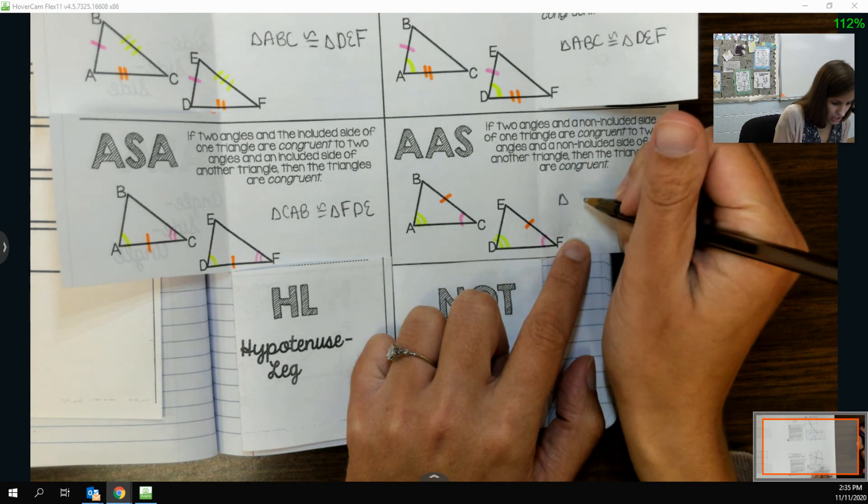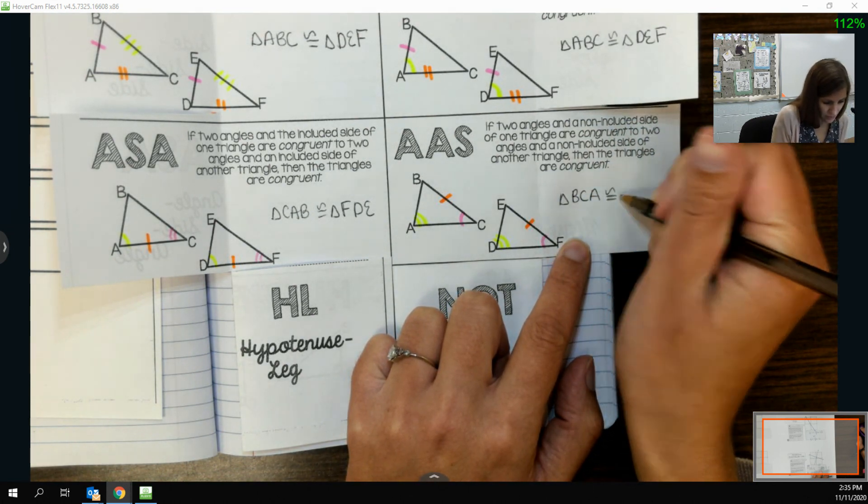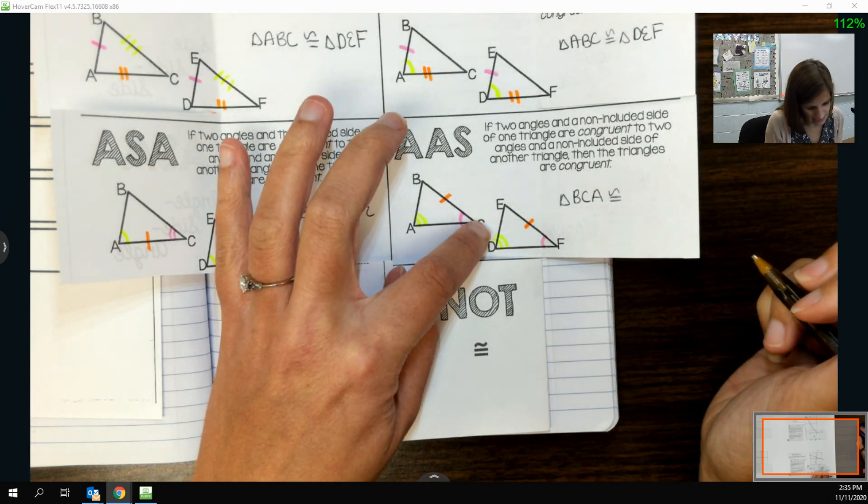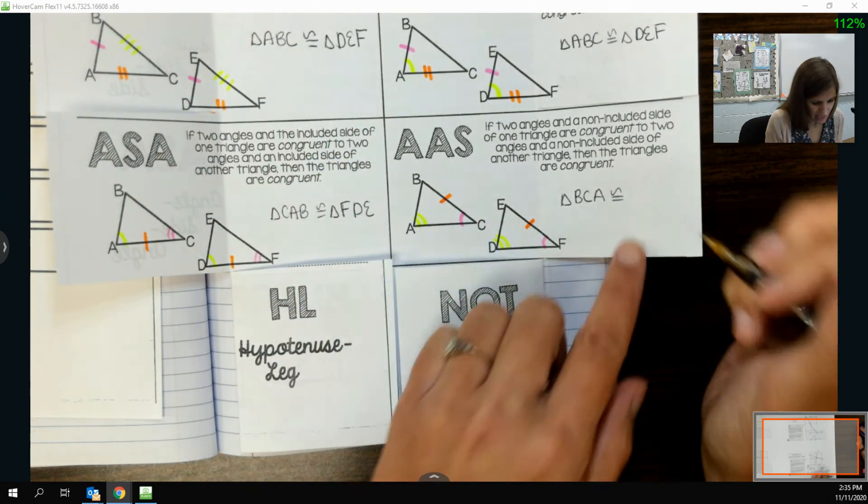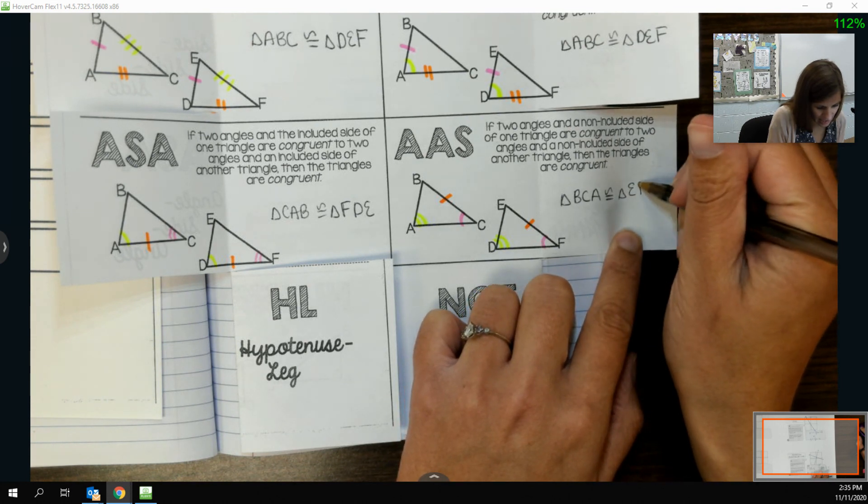To kind of change it up a little bit, if I called the first triangle BCA, I went from B to C to A, I would have to do the same thing on the other one. So that would be triangle E, F, D.